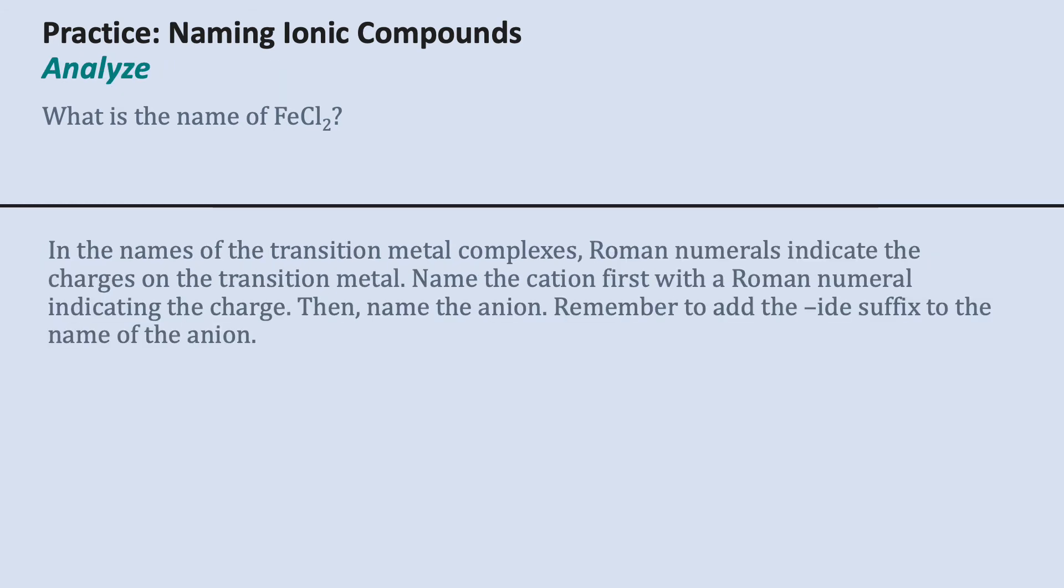In the names of transition metal complexes, we use Roman numerals to indicate the charge on the transition metal. We'll name this like a normal ionic compound, naming the cation then the anion, but with a Roman numeral after the cation to indicate the charge.